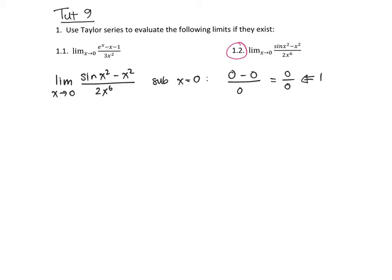This is a zero over zero case, and we know that means we need to do more work. The techniques we have for solving limits of this kind — we could try L'Hôpital's rule, but if you have a look at this, it's not going to help very much, and there's not an awful lot else we can do. So what we're going to do is replace sine of x squared with its Taylor series.